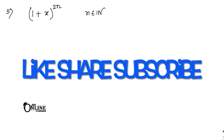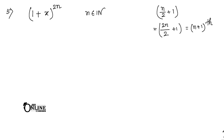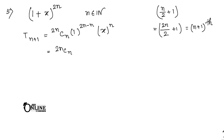Problem 5: Find the middle term in (1 + x)^(2n). Since 2n is always even, the middle term is T(2n/2 + 1) = T(n+1). Applying the formula: T(n+1) = 2nCn · 1^(2n−n) · x^n = 2nCn · x^n. That is your final answer.